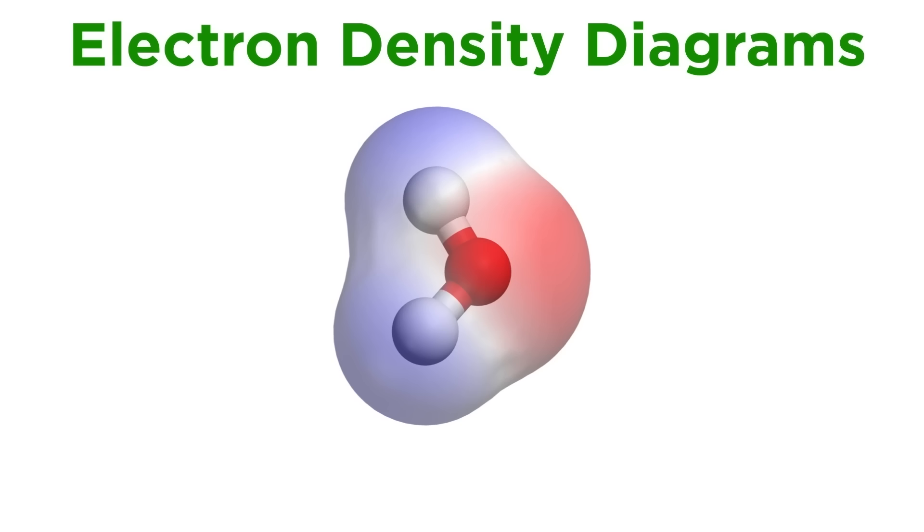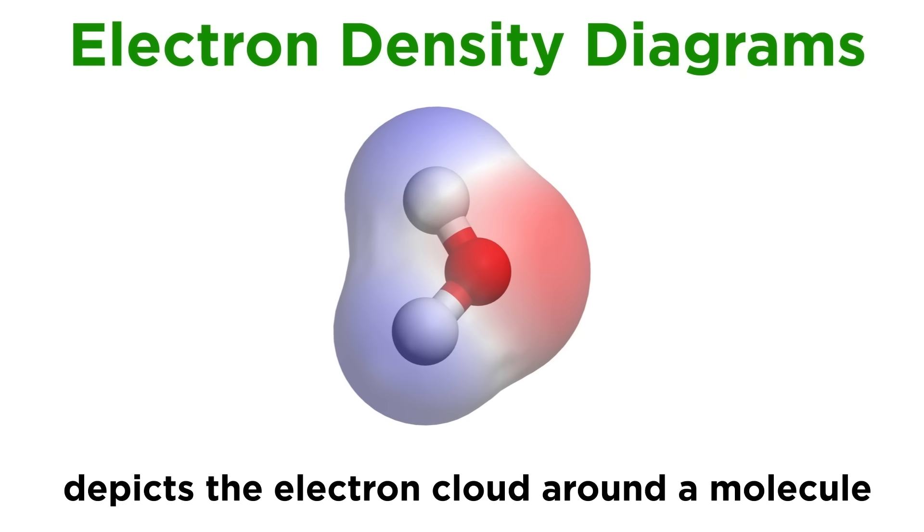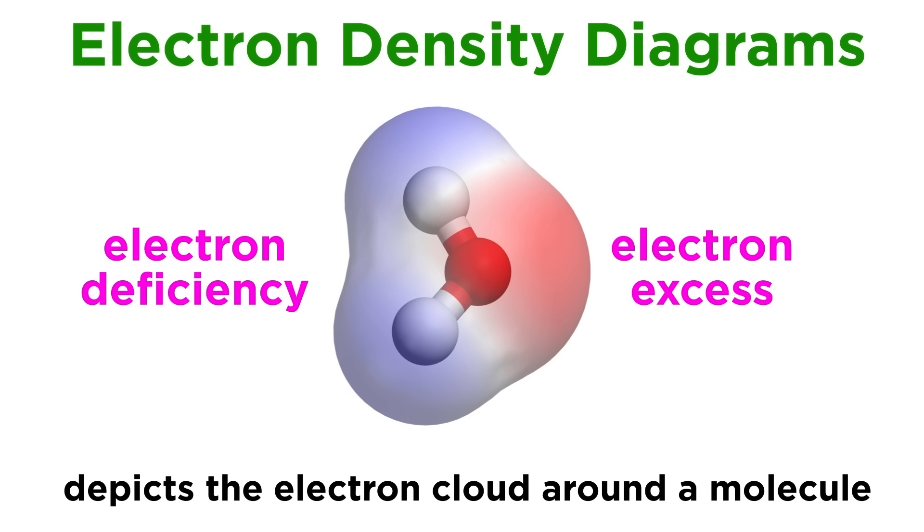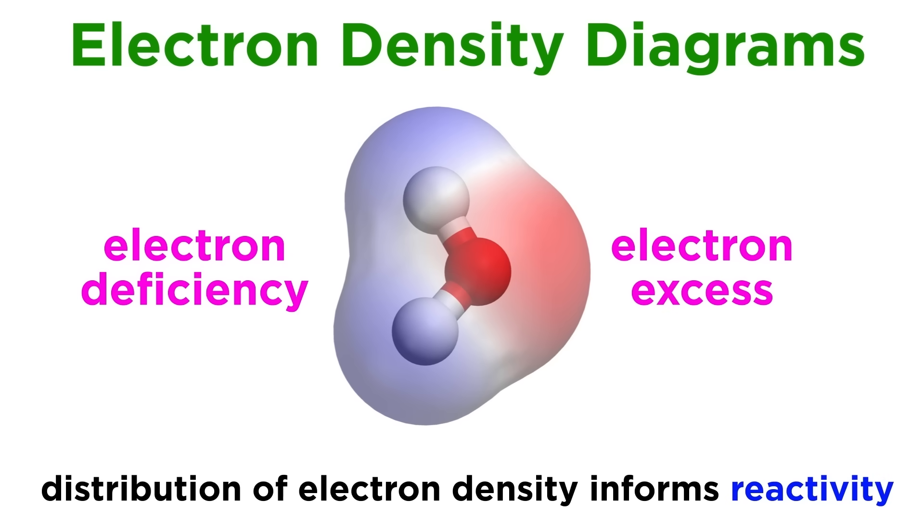We can also look at electron density diagrams, also called electrostatic potential maps. Here we can visualize the electron cloud around the molecule, and red regions represent electron excess, while blue regions represent electron deficiency, with the gradient of colors from blue to red representing increasing electron density. This helps us visualize the electron density distribution, which helps us understand what kinds of chemistry a molecule will participate in.